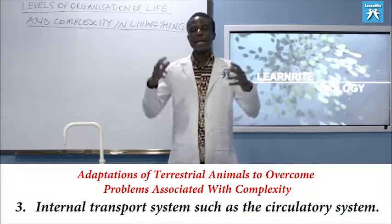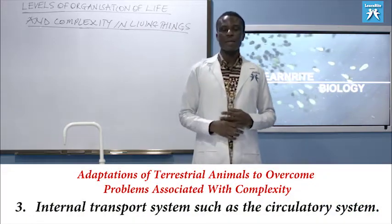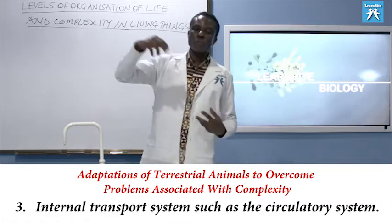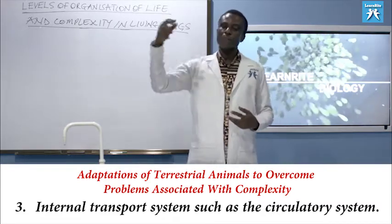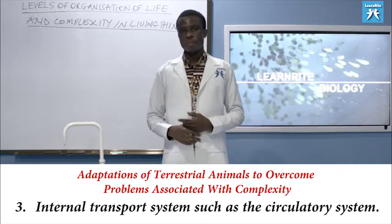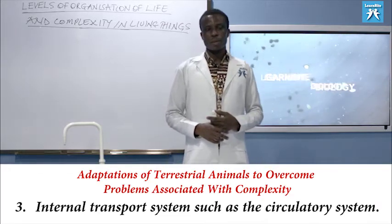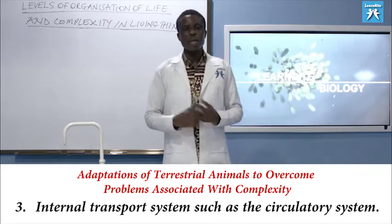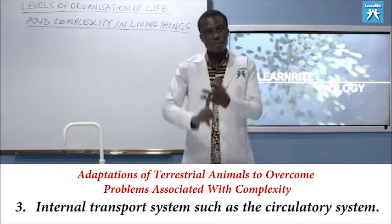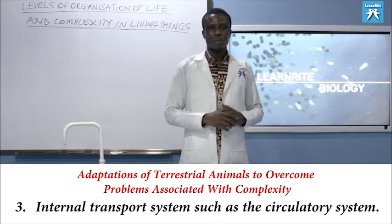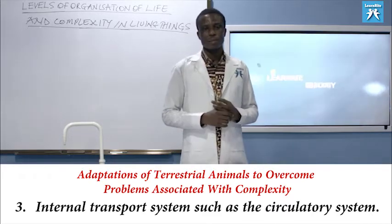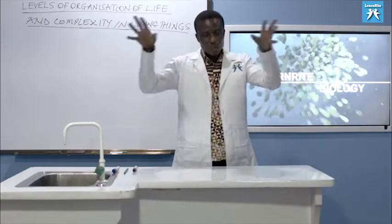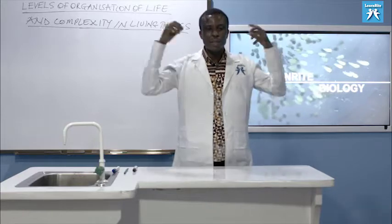Number three: internal transport system. When the air gets to the lungs and oxygen diffuses from the alveoli into the bloodstream, the internal transport system — made up of blood, blood vessels, and the heart — ensures that the blood, which is the medium of transport, is carried to all parts of the body, carrying the oxygen.